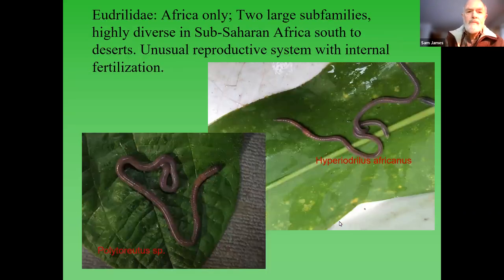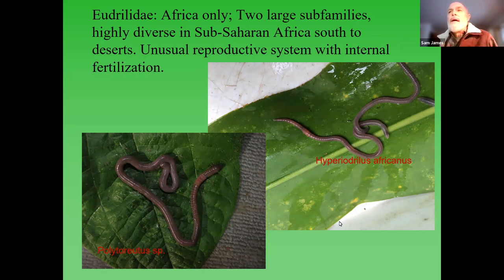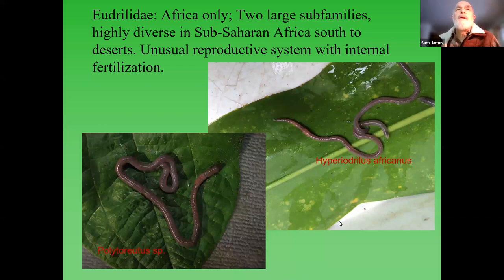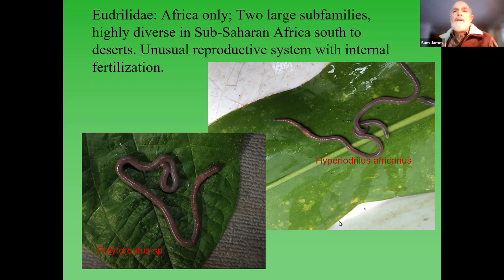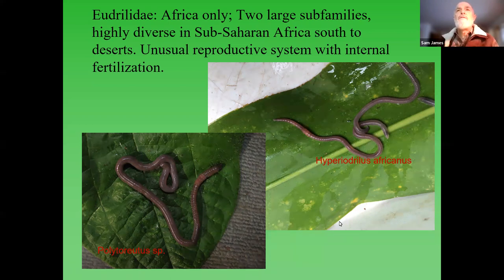Over to Africa, which has a unique family: the Eudrilidae. There's a famous one used in vermicomposting in tropical areas. Hyperiodrilus africanus is a little more widely spread than just Africa - I have found it in Brazil and it's been found in many locations in West Africa. Polythyridris is a very abundant genus in Kenya. These are the only earthworms known to have internal fertilization, which is an oddity. This is a very diverse family with the full range of functional diversity and high biological diversity.